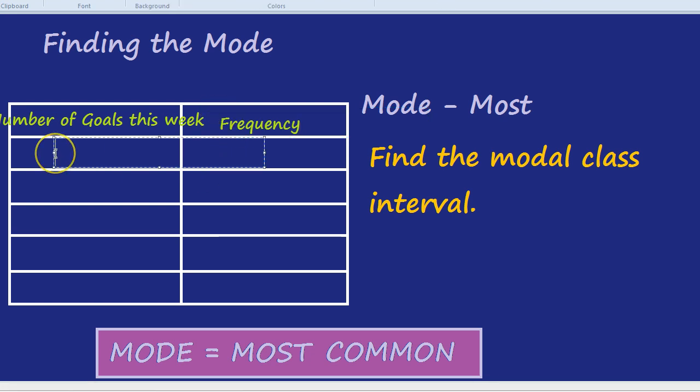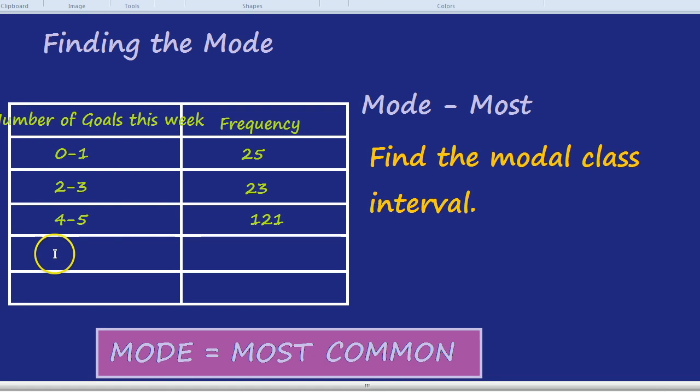How about 0 to 1? Let's say there were 25 players who scored 0 to 1 goals. 2 to 3 goals - 23. 4 to 5 goals is 12.